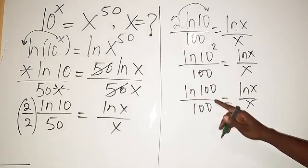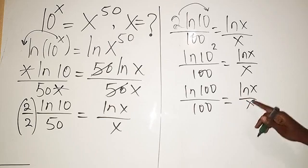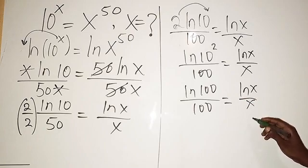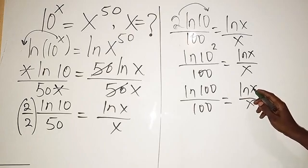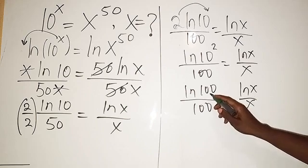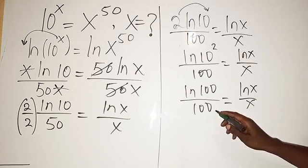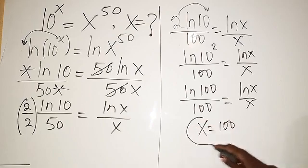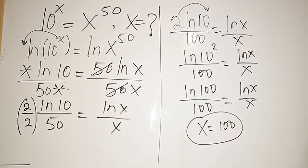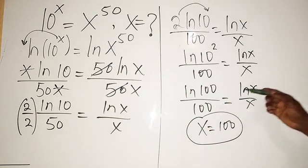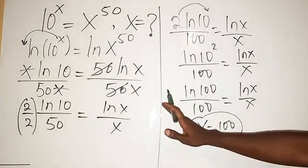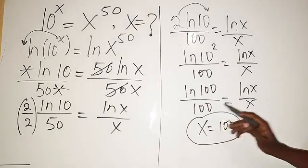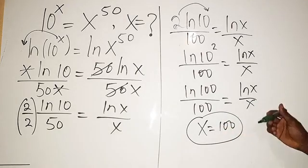So now by looking at this, you can see that if you look at this place ln x over x, we have 100 there, we have 100 there. So it shows that x equals 100. When you do comparison, you have 100 there, you have 100 there. So nothing is here, nothing at the back. This and this are the same, this and this are the same.